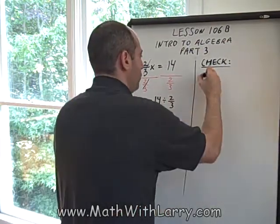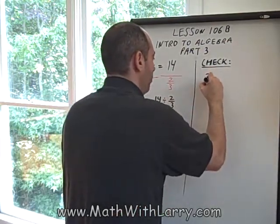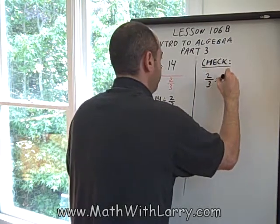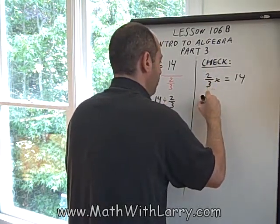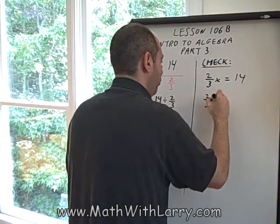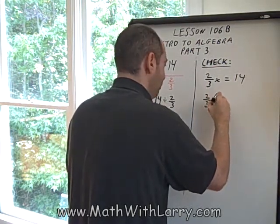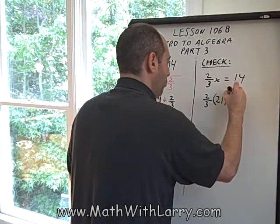Okay, let's check. I'll rewrite the original equation. And here's my check value. 2/3 times 21. Does that equal 14?